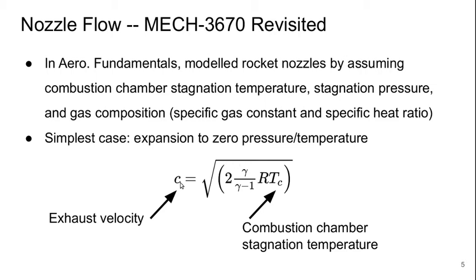Then the exhaust velocity, C, turns out to be the square root of 2 over gamma minus 1, where gamma is the ratio of specific heats, times R, which is the specific gas constant, and Tc, the combustion chamber stagnation temperature.